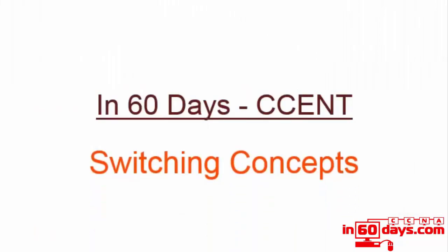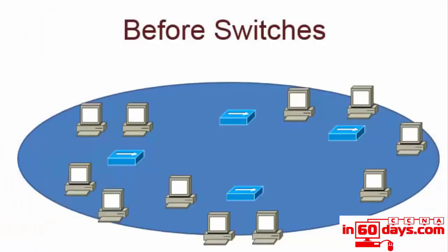Welcome to the presentation on switching concepts. I'm going to cover some real basic layer two switching stuff. Although it's basic, it's very fundamental for us to build on before moving into the more complicated aspects of CCNA, switching, and VLAN trunking protocol. Before switches were invented, we had a device known as a hub — not an intelligent device. It was a box with one or more interfaces where you could plug your Ethernet cable. The hub would take the signal, clean it up, amplify if needed, and then send it out of every other port.